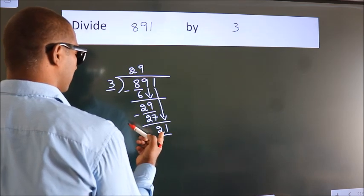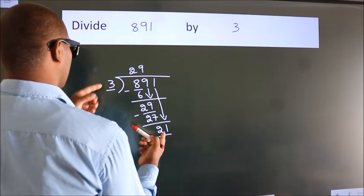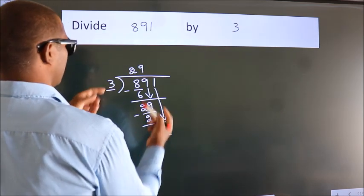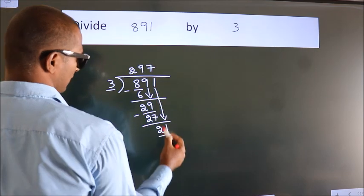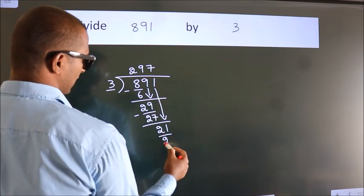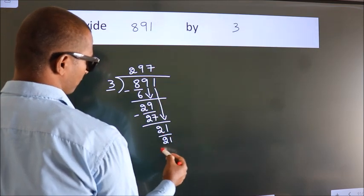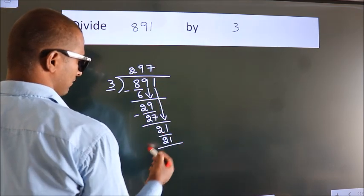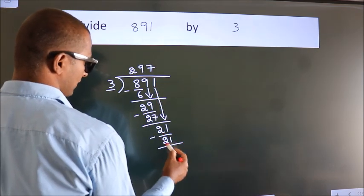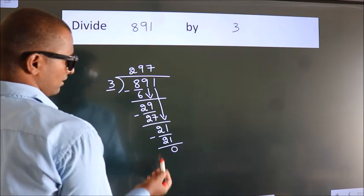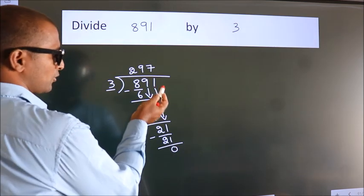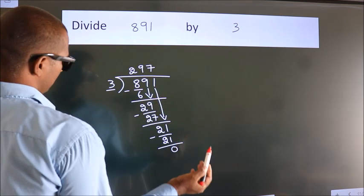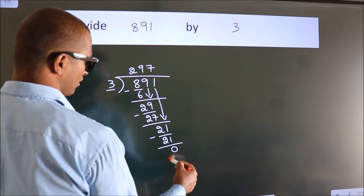When do we get 21 in the 3 times table? 3 7's = 21. Now we subtract and we get 0. No more numbers to bring down, so we stop here.